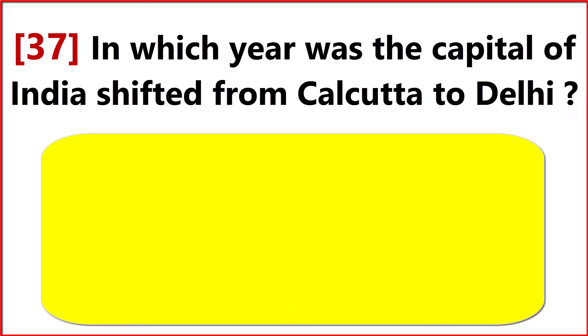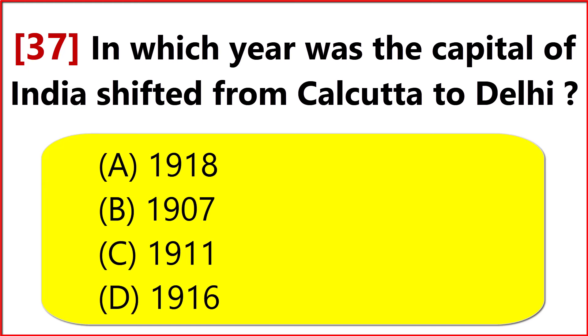In which year was the capital of India shifted from Calcutta to Delhi? Answer Option C: 1911.